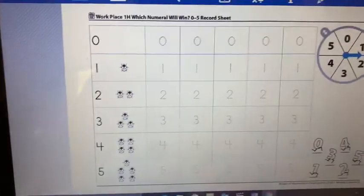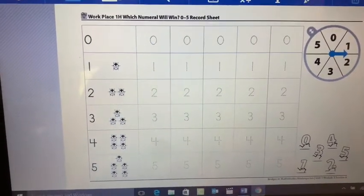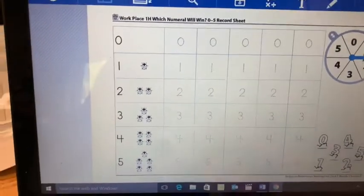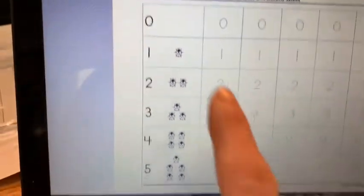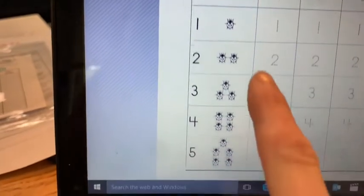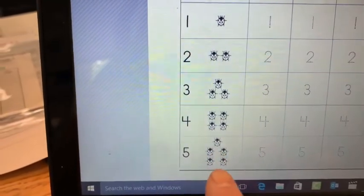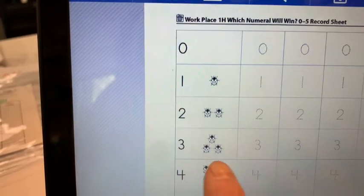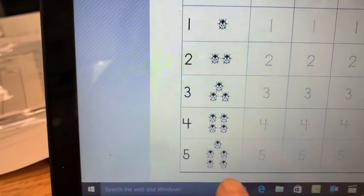And then that's when you can start. Okay, which numeral will win? Numeral is a number. Here are the numbers and look it even shows how many bugs. One, two, three, four, five.